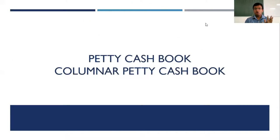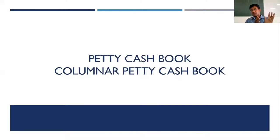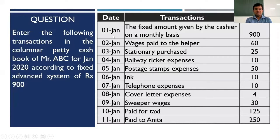In this session we will be talking about the columnar petty cash book. Previously we learned about the simple petty cash book, which is easy to prepare because you just have one single column. But there is another type - the columnar petty cash book - where you have different columns corresponding to different transactions. The petty transactions get categorized and then recorded. We will work out a numerical: enter the following transactions in the columnar petty cash book of Mr. ABC for January 2020, according to fixed advance system of rupees 900.